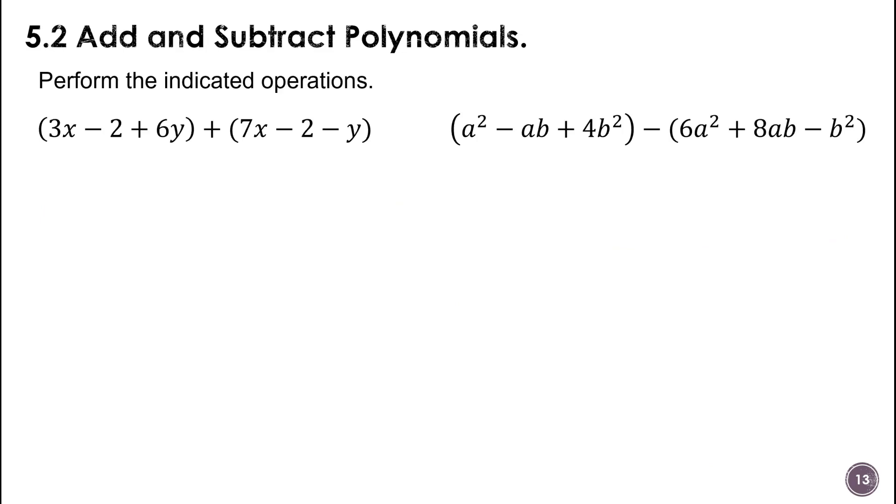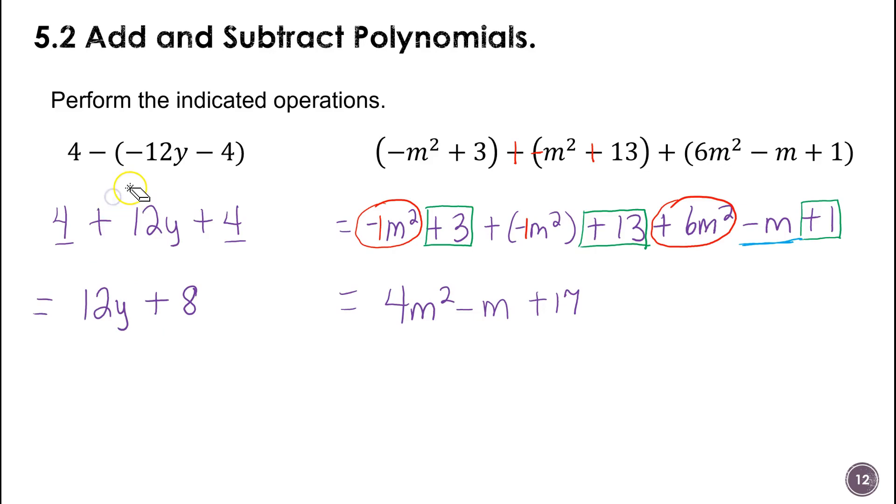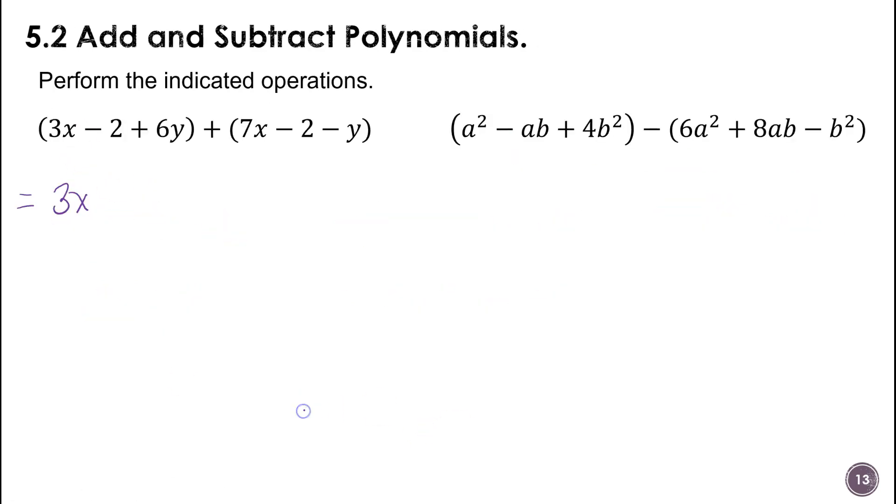Okay, just more practice. That's all this is. So we're adding and subtracting now. It could be either one. And so on the first one, let's just write it without parentheses. So I have 3x plus 7x. You know, if I take the parentheses off this way and I'm not having to do anything with signs, then I can just put them side by side. So 3x plus 7x. And then I have a negative 2 plus negative 2. And then 6y plus negative 1y. We're about to crowd in over here. Okay, so I have all my like terms side by side. That makes it easy to simplify.